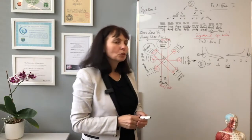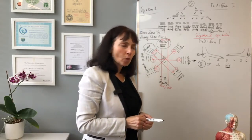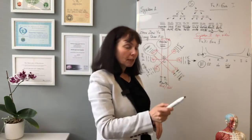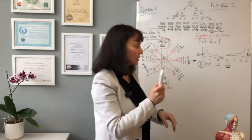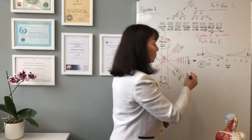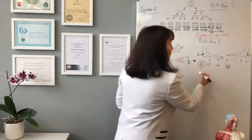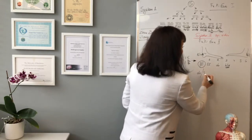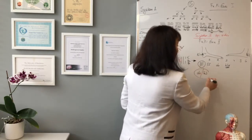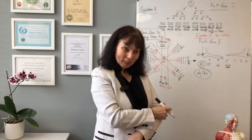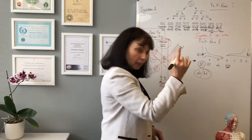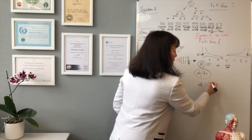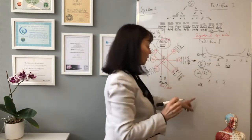Now we'll come to system four. Let's discuss, for example, tennis elbow — the tennis elbow between the large intestine and Sanjiao meridians, a very common situation. To treat the large intestine according to systems one, two, and three: